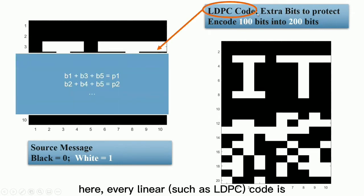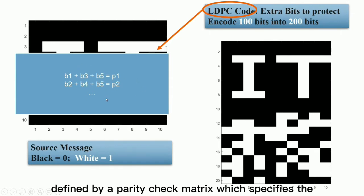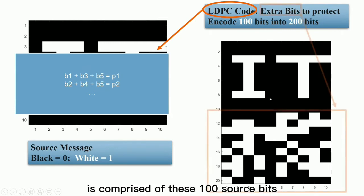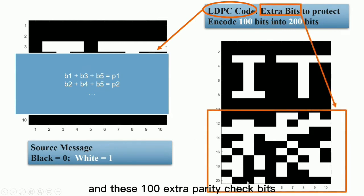Here, every linear code is defined by a parity check matrix which specifies the set of linear constraints imposed on the codeword bits. The transmitted vector is comprised of this 100 source bits and this 100 extra parity check bits.